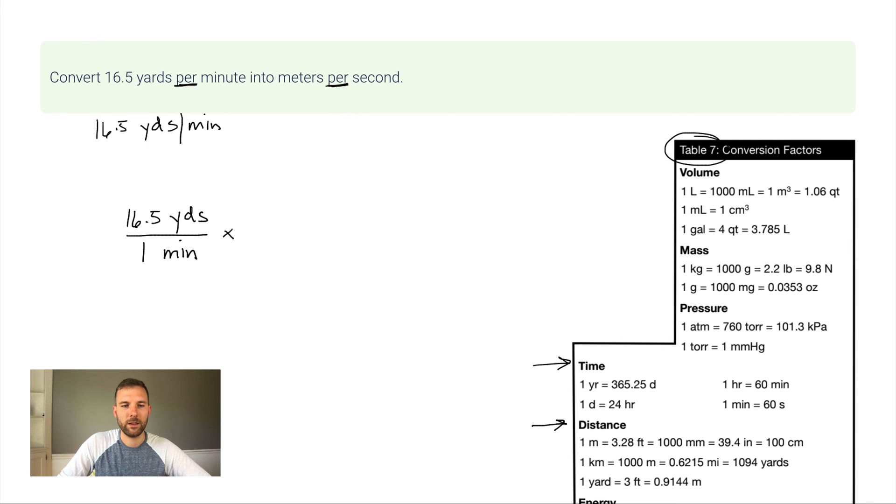So I'm going to start with a fraction. I'm going to put yards right underneath because I want to cancel out yards, and I want to find yards over here, distance. One yard is equal to 0.9144 meters. 0.9144 meters. Okay. Let's call a timeout for a second. If I were to stop, I'd be in meters per minute. I want meters per second. So I have to convert minutes into seconds.